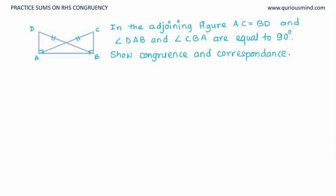In the adjoining figure, AC is equal to BD and angle DAB and angle CBA are equal to 90 degrees. Show congruence and correspondence.